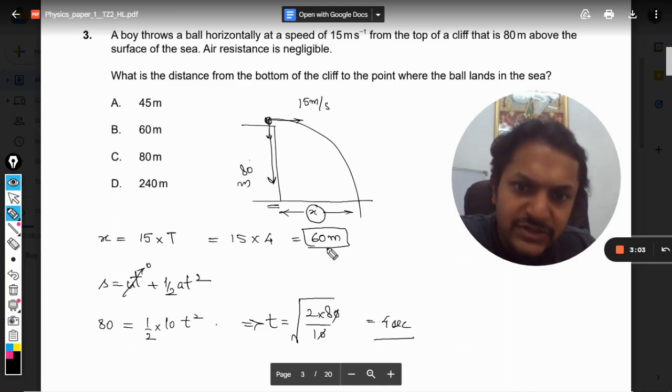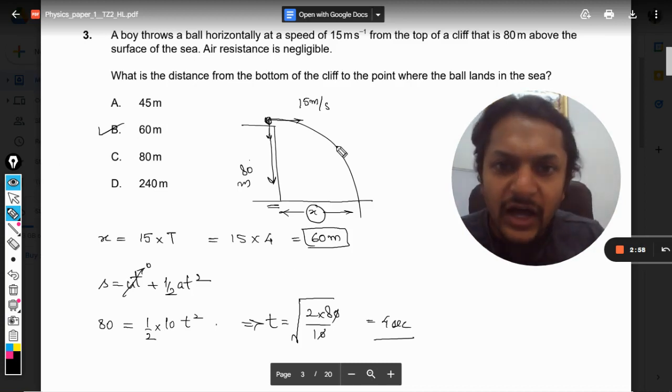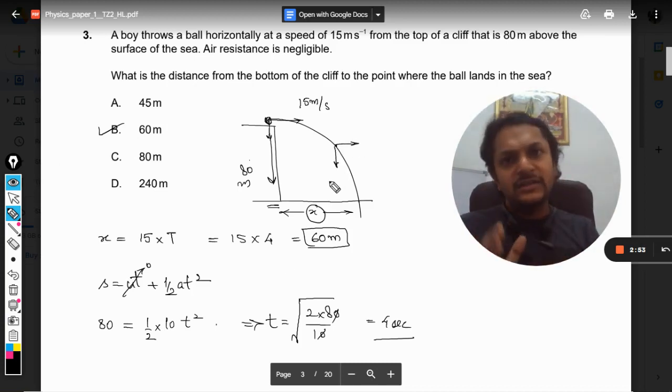So our answer will be B, 60 meters. We are considering two different motions: one is vertical, another is horizontal.